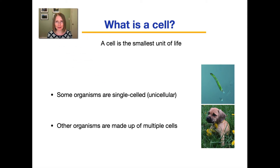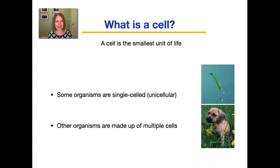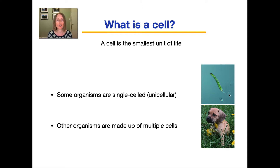So what is a cell? A cell is the smallest unit of life — the smallest thing that has all of the properties of living things. Now some organisms, such as the one shown here, are single-celled, or sometimes called unicellular, as in their whole body consists of just one cell.